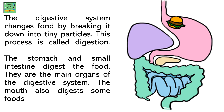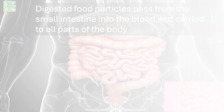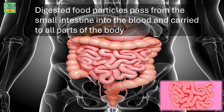The stomach and small intestine digest the food — they are the main organs of the digestive system. The mouth also digests some amount of food. The digested food particles pass from the small intestine into the blood and are carried to all the parts of the body.